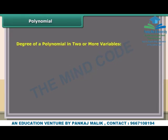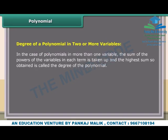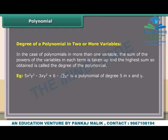Degree of a polynomial in two or more variables: In the case of polynomials in more than one variable, the sum of the powers of the variables in each term is taken, and the highest sum so obtained is called the degree of the polynomial. Example: 5x²y³ − 3xy² + 6 − √2·x⁴ is a polynomial of degree 5 in x and y.